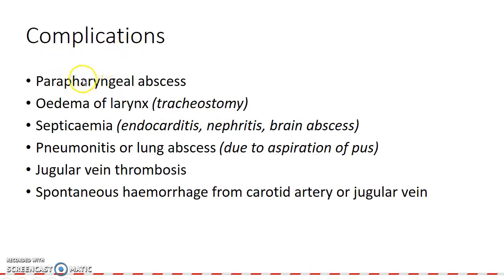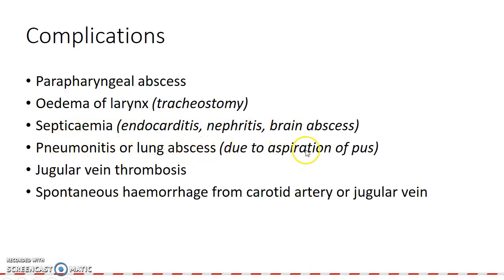Now let us see about the complications of this condition. If peritonsillar abscess is not treated properly, it can lead to other parapharyngeal abscesses. It can lead to edema of the larynx, causing obstruction of the airway, in which case tracheostomy should be done. It can lead to septicemia, causing endocarditis, nephritis, and brain abscess. It can cause pneumonitis or lung abscess due to aspiration of pus. It can lead to jugular vein thrombosis, and spontaneous hemorrhage from the carotid artery or jugular vein.